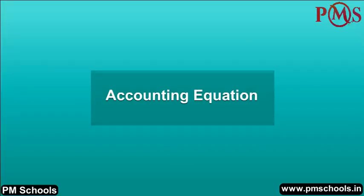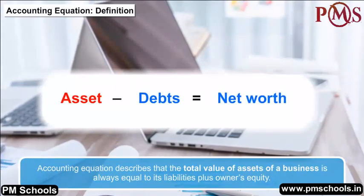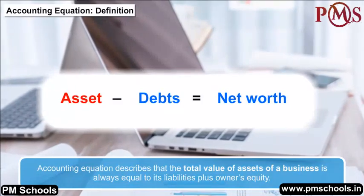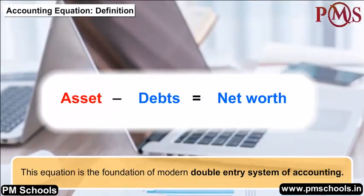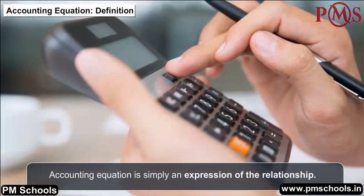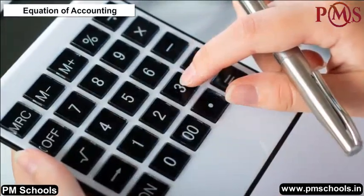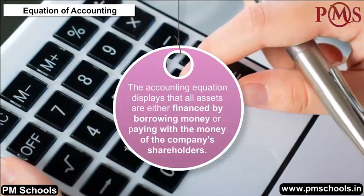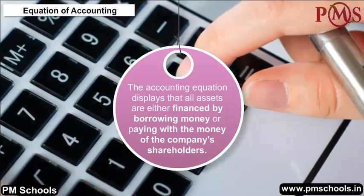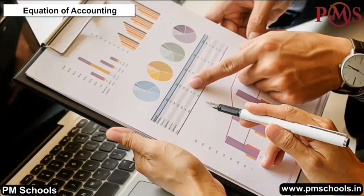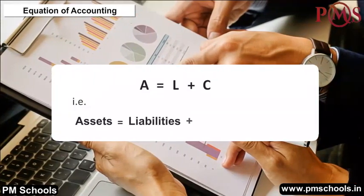Accounting Equation: The accounting equation describes that the total value of assets of a business is always equal to its liabilities plus owner's equity. This equation is the foundation of the modern double entry system of accounting. It expresses the relationship among assets, liabilities, and owner's equity. The general form is: A = L + C, that is, Assets = Liabilities + Owner's Equity.